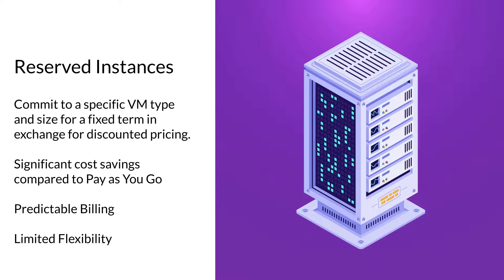Next, we have reserved instances, or RIs. Reserved instances allow users to commit to a specific virtual machine type and size for a fixed term, usually one year or three years. And in exchange for this, they get discounted pricing for that commitment. The key features of reserved instances include significant cost savings when compared to pay-as-you-go, and predictable billing, which makes budgeting more straightforward, but it is not as flexible as the pay-as-you-go model.